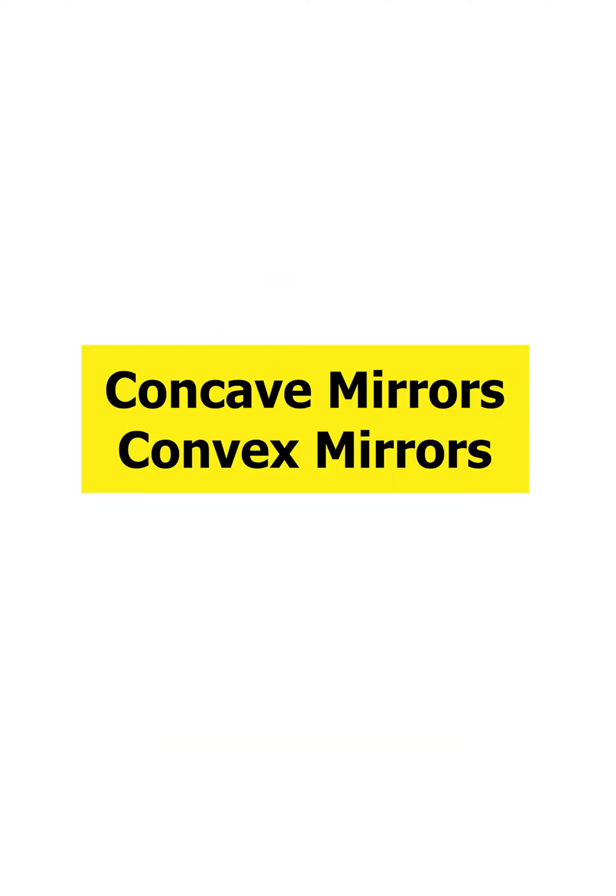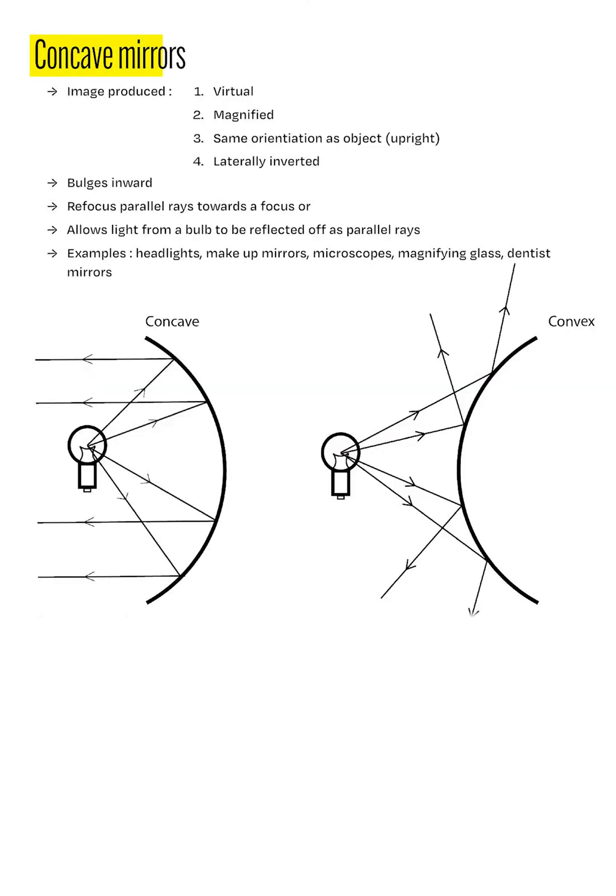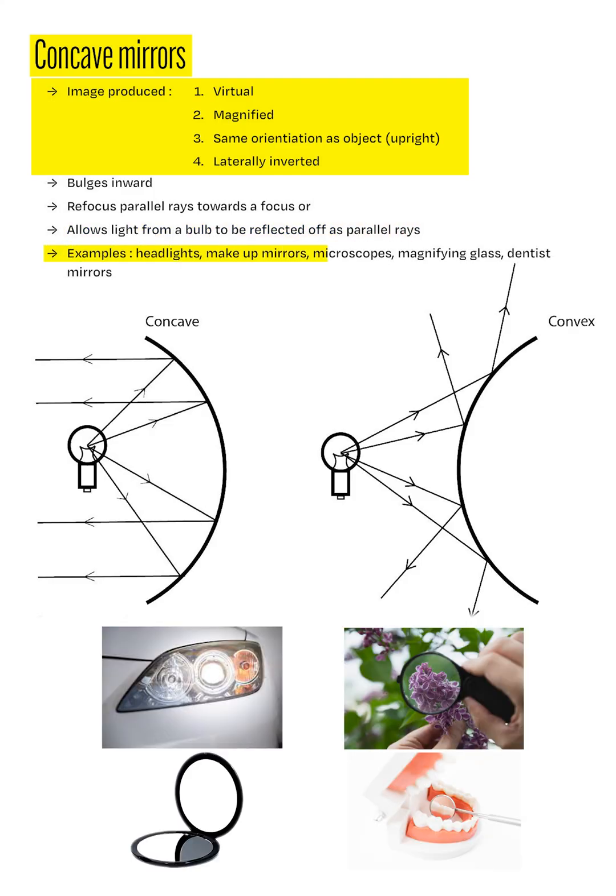Now onto the last part of the chapter, we will be discussing concave and convex mirrors. Concave mirrors bulge inwards. These types of mirrors produce images which are virtual, magnified, upright and laterally inverted. This is because concave mirrors refocus parallel light rays towards a focal point, or can also cause light from a source to be reflected off its surface as parallel rays. That is why this type of mirror are often used in cosmetic mirrors, magnifying glasses and dentist mirrors where an enlarged image needs to be produced. This type of mirror are also used in vehicle headlights to reflect light from bulbs in order to produce strong beams of light.